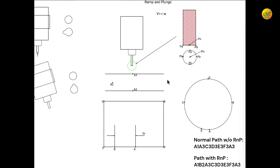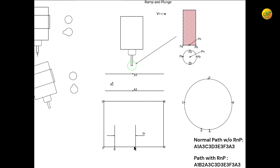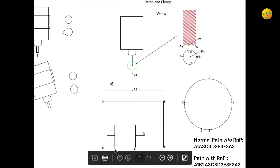This is what is called ramp plunge — the tip of the tool goes from A1 to B2, then from B2 to A3, then continues cutting. For example, if we are cutting a square with points A, B, C, D, E, F, the normal toolpath would be: go to A1, plunge directly to A3, then cut B, C, D, E, F, back to A. The ramp plunge toolpath instead goes A1 to B2, then B2 to A3, then continues cutting C3, D3, E3, F3, A3.